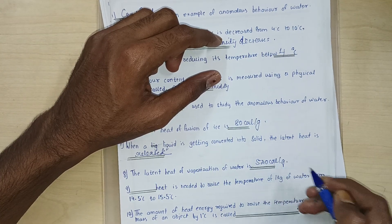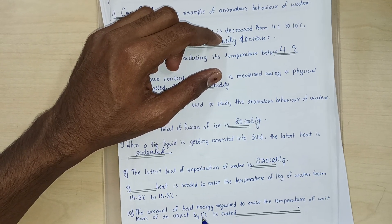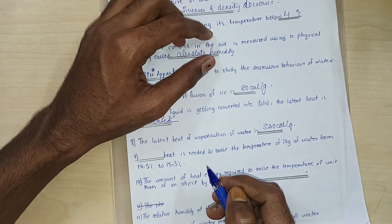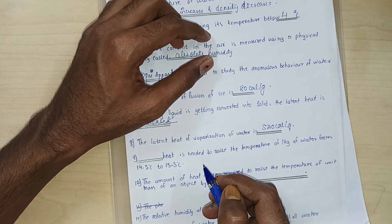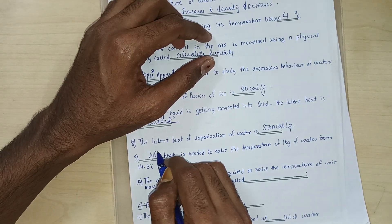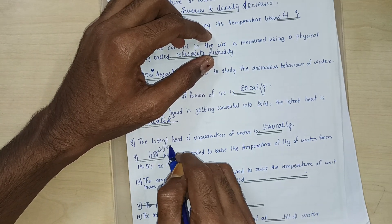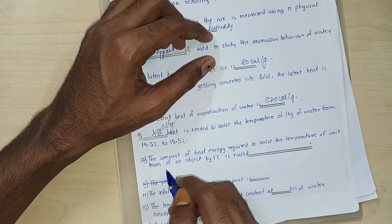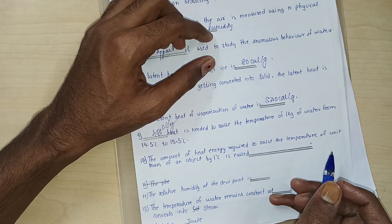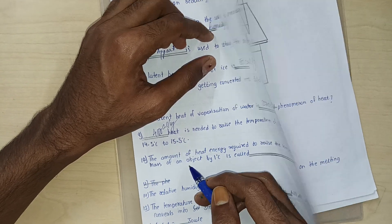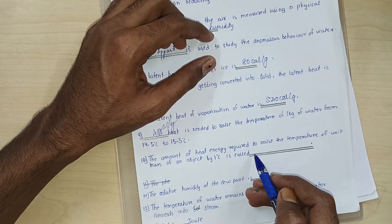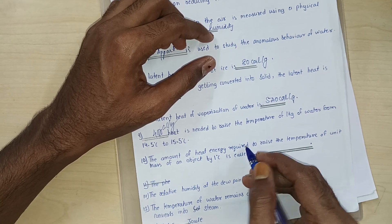Dash heat is needed to raise the temperature of one kg of water from 14.5 degrees Celsius to 15.5 degrees Celsius. We need 4180, 4180 calorie per gram. The amount of heat energy required to raise the temperature of unit mass of an object by one degree Celsius is called dash, is called specific heat capacity.